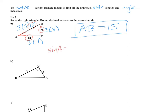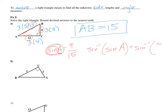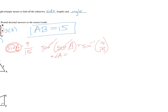Sine of A equals opposite over hypotenuse, which is 9 over 15. To isolate the angle measurement — to get A by itself since it's attached to the sine — you take the inverse sine of both sides. The inverse detaches the sine from A, so angle A is by itself. The measurement of angle A equals 36.9 degrees.